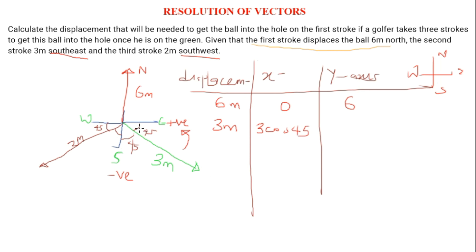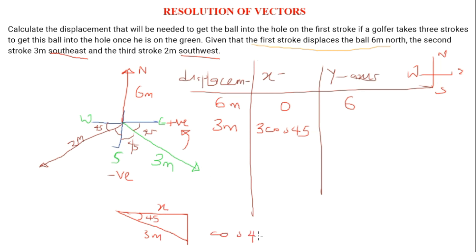The reason is that when there is an angle adjacent to the x-axis it takes cosine. Using SOH-CAH-TOA: since we have the adjacent and the hypotenuse, cos 45 equals adjacent x over hypotenuse 3 meters, which implies that x equals 3 cos 45.